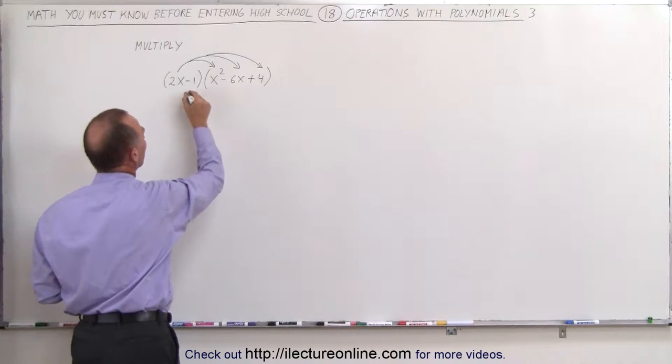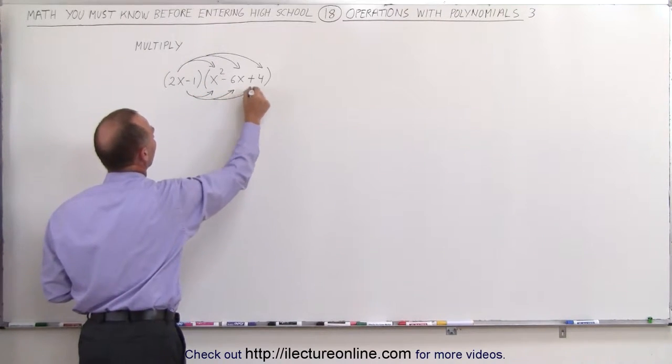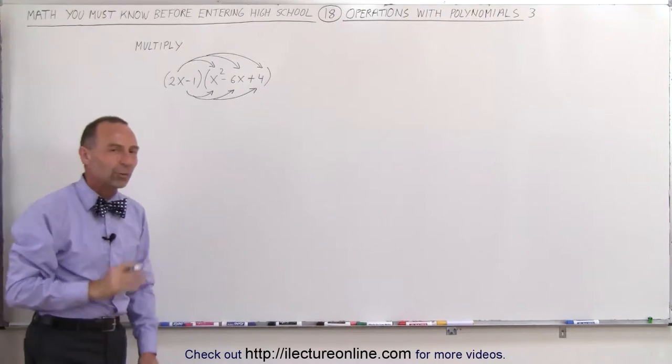And then we take the minus 1 and multiply it times the x squared, the minus 6x, and the plus 4. So we'll do it this way first.